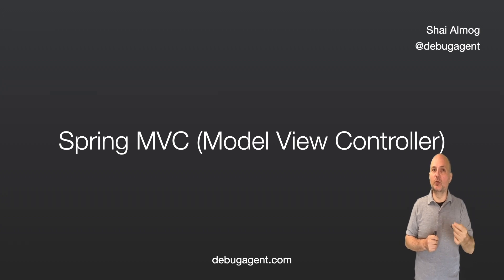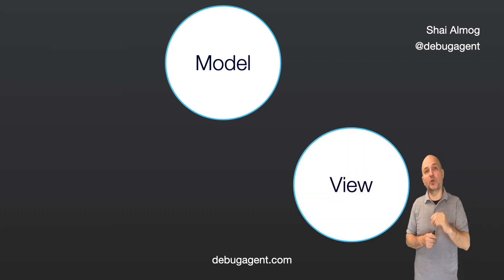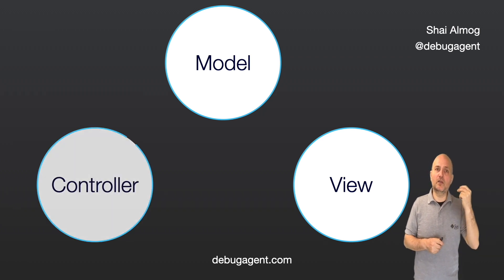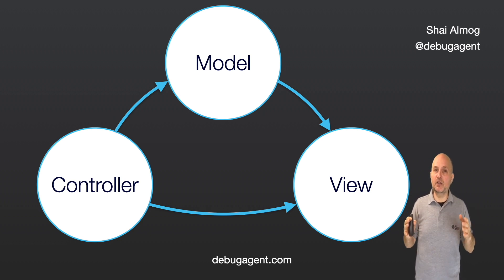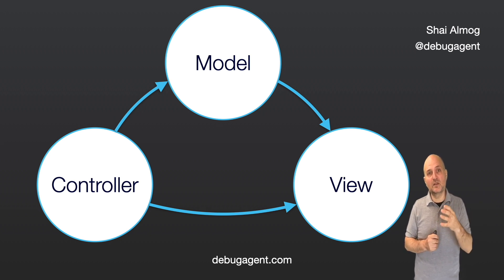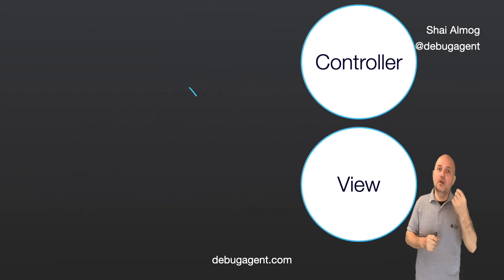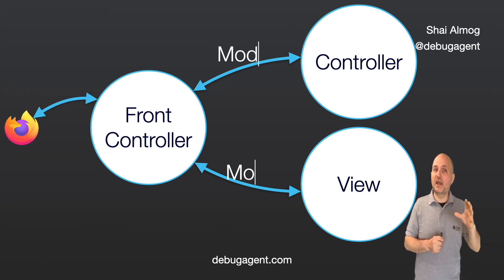Spring MVC is built on the model-view-controller design pattern, which separates the application logic into three distinct components: the model, which represents the data and business logic; the view, which is responsible for displaying data to the user; and the controller, which handles incoming requests and coordinates the interaction between the model and the view. Here we can see a diagram of the classic MVC pattern. Spring MVC provides a flexible and extensible architecture for building web applications, making it a popular choice for both small and large-scale projects. However, web-based applications don't quite fit into the classic structure, so the Spring MVC version arranges the three parts a bit differently, as you can see here.